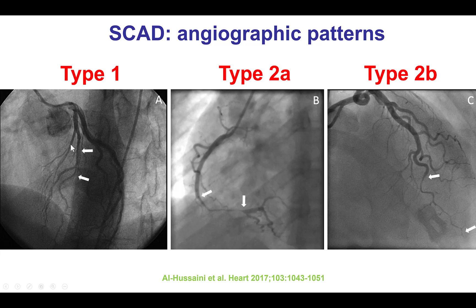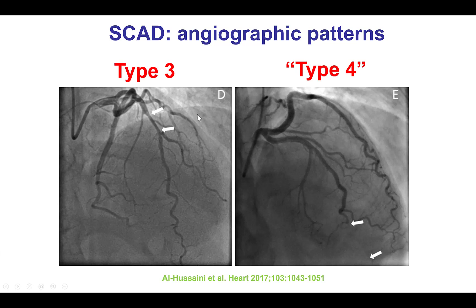These are some examples: type 1 SCAD with a radiolucent segment in the mid-LAD; type 2A, in which there is diffuse narrowing of the distal right coronary artery with normal-appearing vessels more proximally and distally; type 2B, where there is diffuse stenosis all the way to the end of the vessel; and type 3, which appears as a more focal tubular stenosis. There has also been a proposal for type 4 SCAD, in which there is occlusion of the vessel distally that subsequently spontaneously re-canalizes, in patients in whom embolism has been excluded.